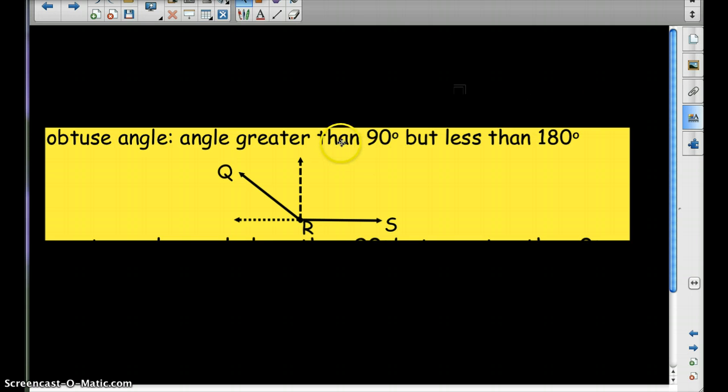An obtuse angle is an angle greater than 90 degrees but less than 180. 180 right here is a straight line. This is 180. So obtuse is in between 90 and 180.